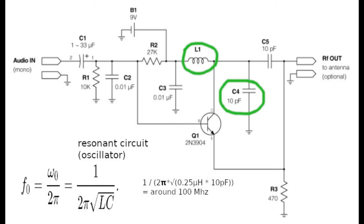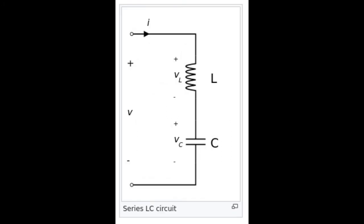C4 should be the oscillating capacitor because L1 and C4 are connected in series. L1 gets positive voltage from one side and C4 goes to ground on the other side, like in this schematic from Wikipedia which shows a series LC circuit.